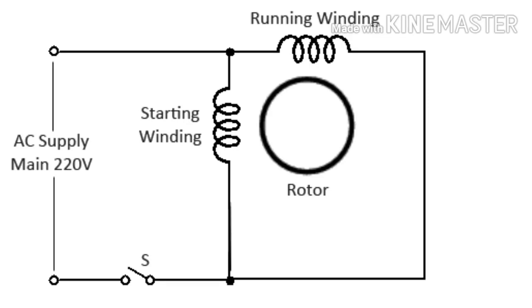Let us imagine a scenario in which the capacitor is not used. The same phase — 230 volts or 110 volts — will enter into both windings: the running winding and the starting winding. Because of this same phase entering both windings, no magnetic rotation will be created, and as a result, the rotor will not rotate and the fan will not start.